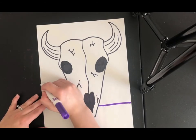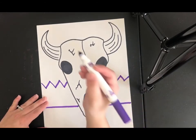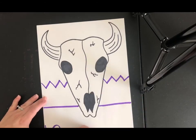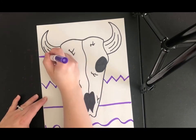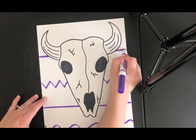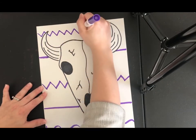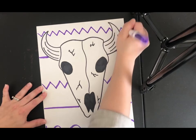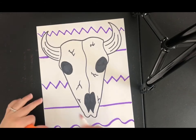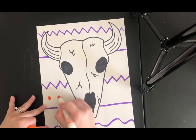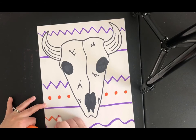So I'm going to create patterns in the background using different colored markers. So I'm going to use different lines and this is going to make for a really interesting piece. It's going to also make my skull pop and stand out more. So I'm using a zigzag line. And now I'm going to switch and use some purple. Make some polka dots.